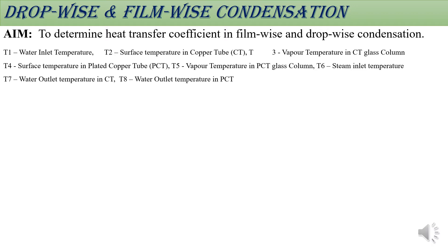We have already covered theory and experimentation. Just recalling: temperatures we have to note — T1 will be the water inlet temperature, T2 will be the surface temperature in the copper tube. We have two types of copper tubes: one is a simple copper tube and one is a plated copper tube (PCT). In the plated copper tube we find film-wise condensation; in the simple copper tube we find drop-wise condensation. T3 will be the vapor temperature in the copper tube glass column, T4 will be the surface temperature in the plated copper tube, and T5 will be the vapor temperature in the PCT glass column.